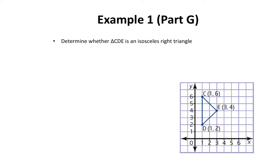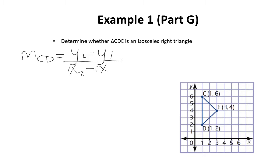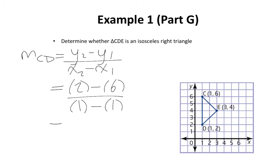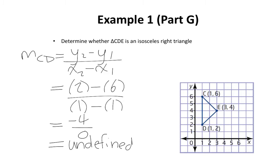And for good measure, I'm also going to figure out the slope for line CD. Substituting in known values: instead of y2 I put 2, instead of y1 I put 6, instead of x2 I put 1, and instead of x1 I put 1 as well. You're going to get something very interesting — negative 4 over 0. You cannot divide a number by 0, which means the slope is undefined. And if the slope is undefined, that means it is a vertical line. If it were a horizontal line, its slope would be 0.